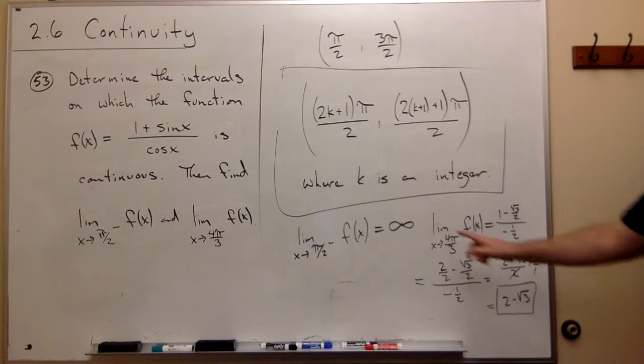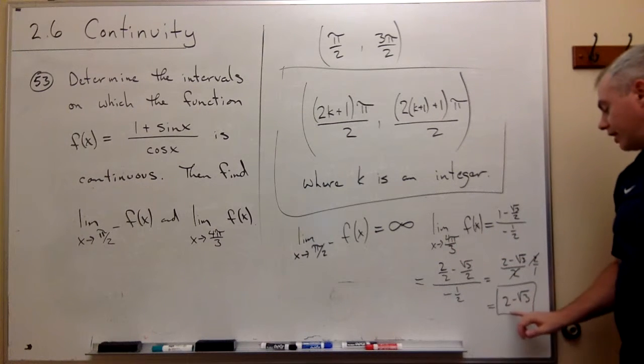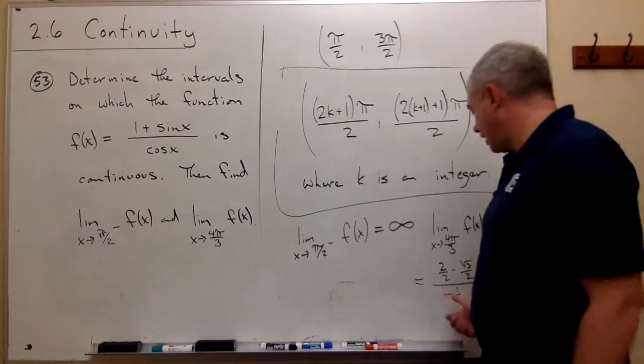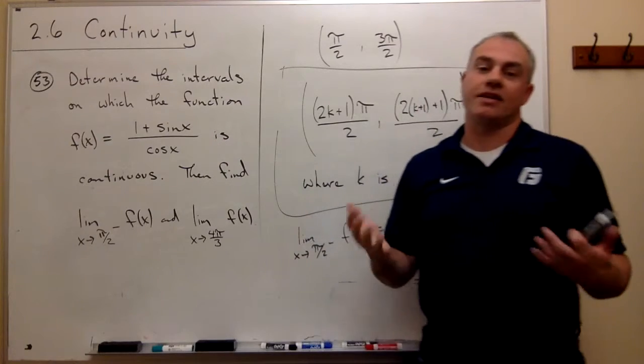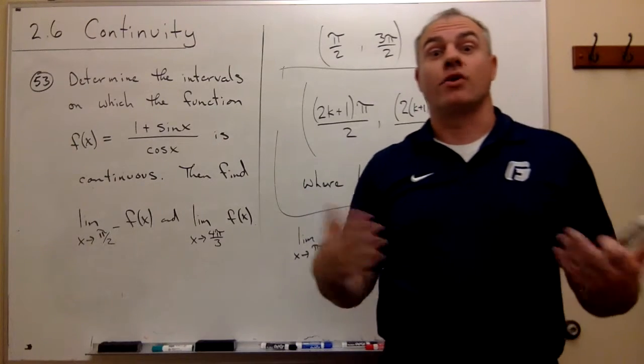So the limit as x goes to 4 pi over 3 is just 2 minus root 3 because by plugging in the 4 pi over 3, I'm not really causing any division by 0. So I can just plug it in.